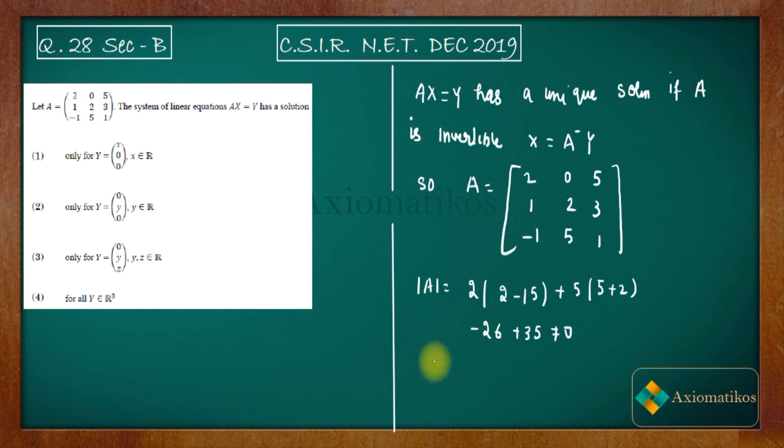A matrix is invertible if and only if its determinant is non-zero. Since det(A) ≠ 0, the matrix A is invertible. Therefore, A*x = y has a unique solution for all y ∈ R³. So option 4 is correct.